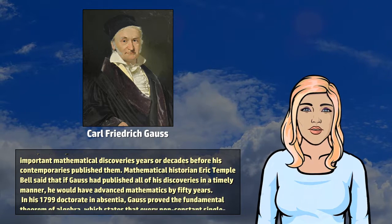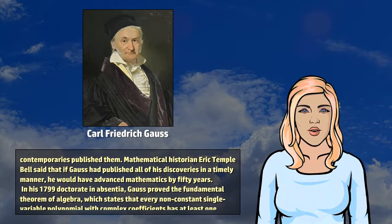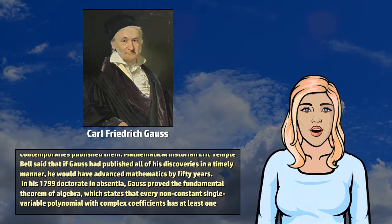Mathematical historian Eric Temple Bell said that if Gauss had published all of his discoveries in a timely manner, he would have advanced mathematics by fifty years.